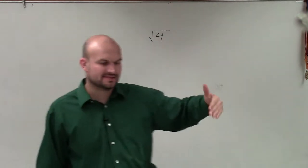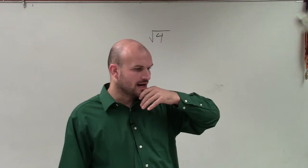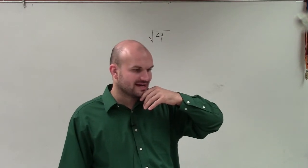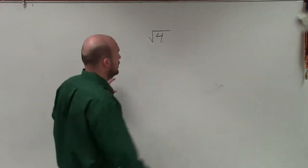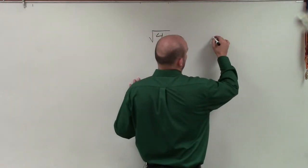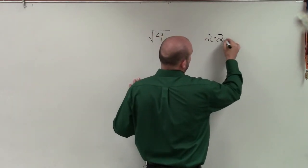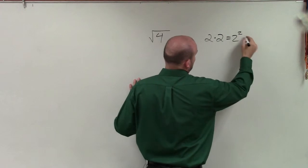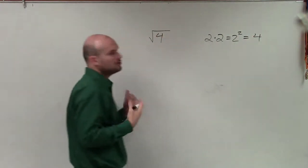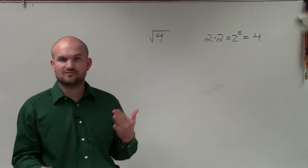To better understand this, we can rewrite 4 to make it clearer. You understand that 2 times 2 is equal to 2 squared, which is equal to 4. Those are all different ways we can represent 4.